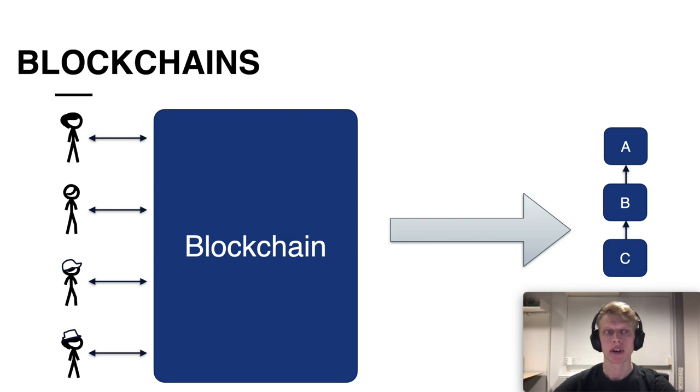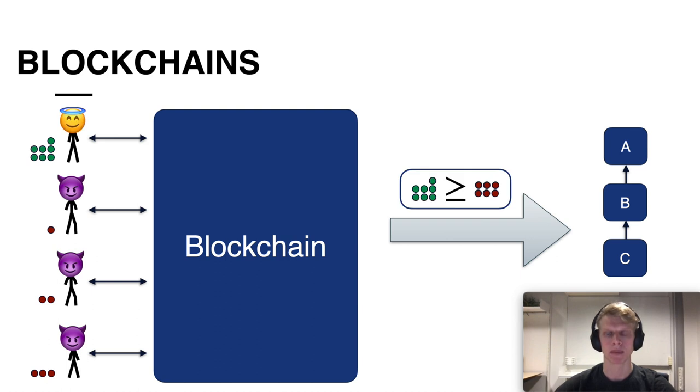However it's not always guaranteed that this total order will be built. This is only guaranteed if each party owns some resource and a majority of these resources remains under honest control. But this is not the only assumption needed for blockchain protocols to work. In fact they also rely on a flooding network. So in order to build the total order both of these assumptions will need to hold.